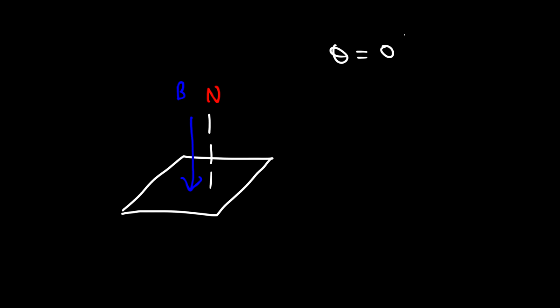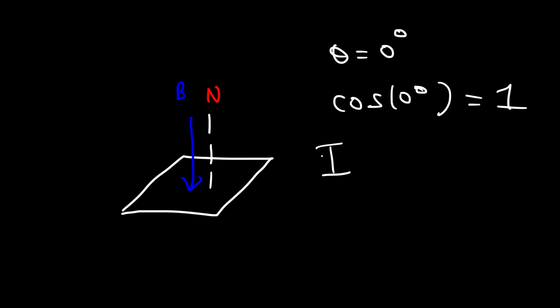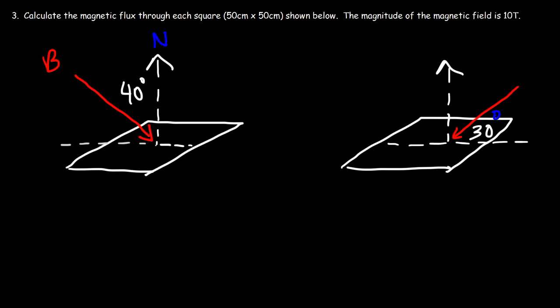In the last problem, the magnetic field was parallel to the normal line, so the angle between them was zero degrees. Cosine of zero degrees is one, which is why the magnetic flux in that problem was simply B times A — because the field was completely perpendicular to the face of the coil.